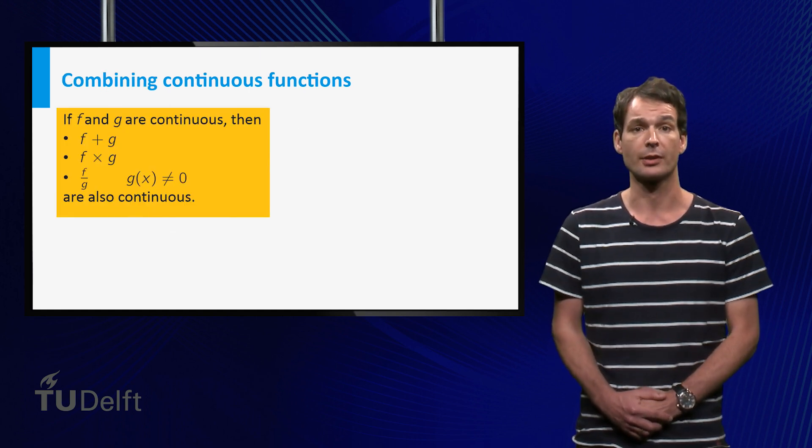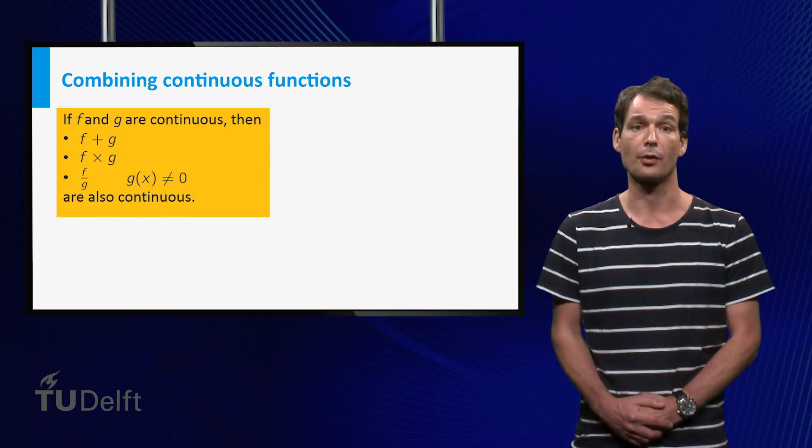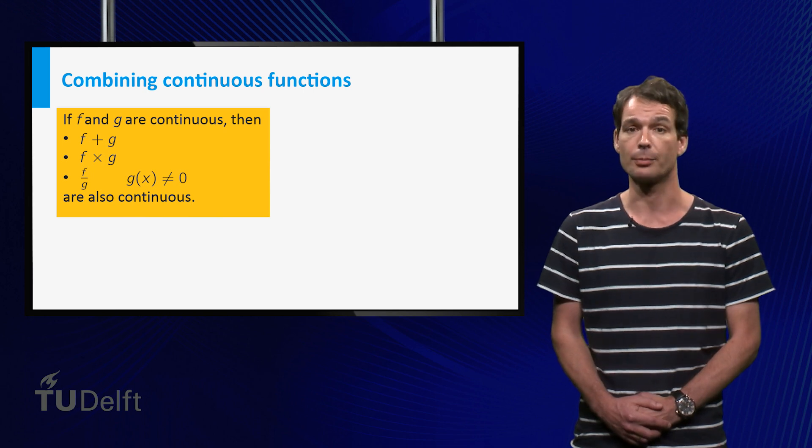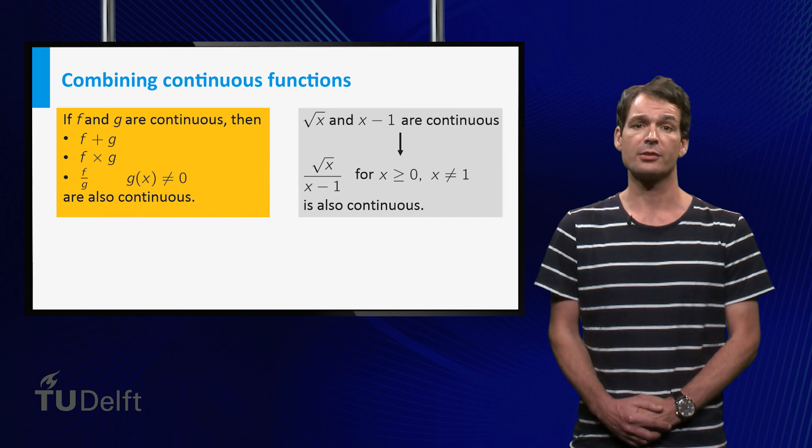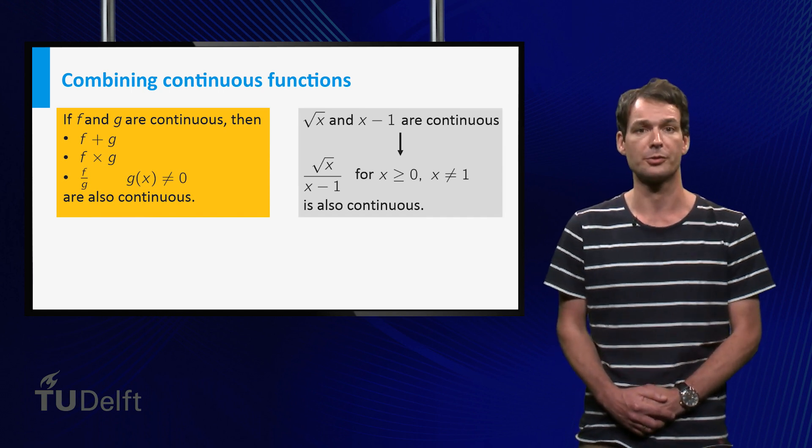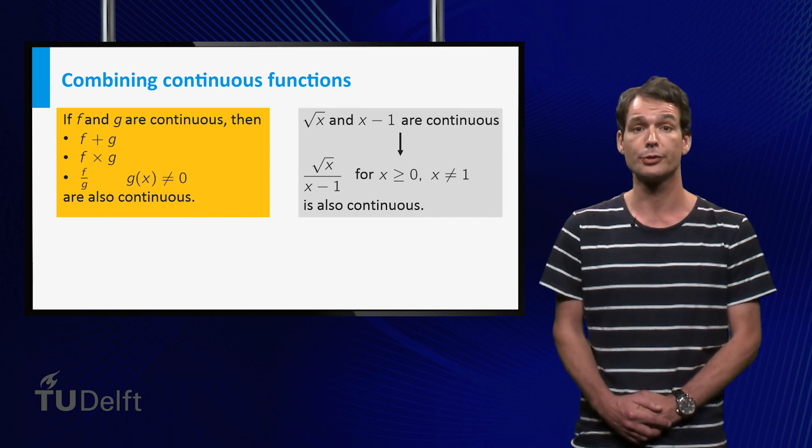If we make a new function out of two continuous functions by adding, multiplying or dividing them, we get again a continuous function. For example, the square root of x divided by x minus 1 is continuous on its domain, that is, on numbers larger than or equal to 0 except 1, because it is the quotient of two continuous functions.